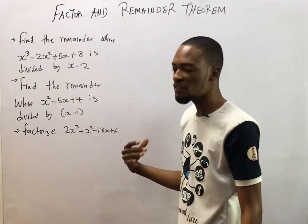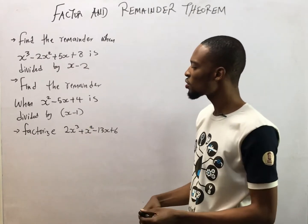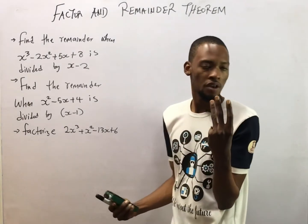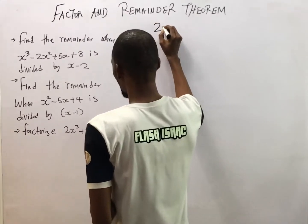This polynomial is of degree 3. That means the highest power of variable is 3. So for polynomial of degree 3, you have 3 factors. For polynomial of degree 2, you have 2 factors. Let's look for the first factor.